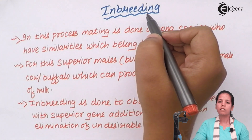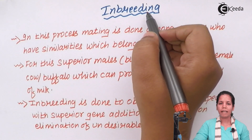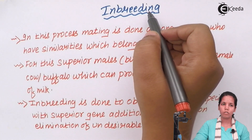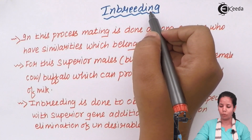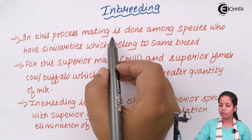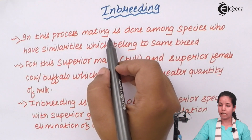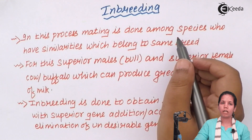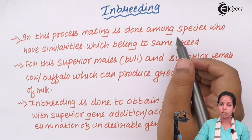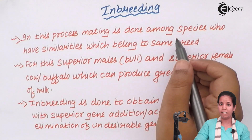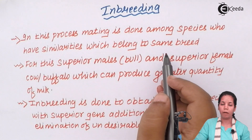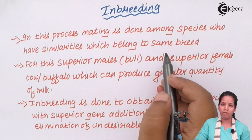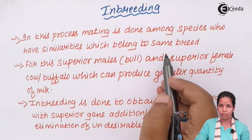Inbreeding. In simple language, inbreeding involves species or cattle which belong to the same family or same ancestral group. Mating is done among species which have similarities in appearances, looks, or genetic markers. They have to belong to the same breed or same family — for example, if it is a Sahiwal family, inbreeding must be between two species belonging to that family.